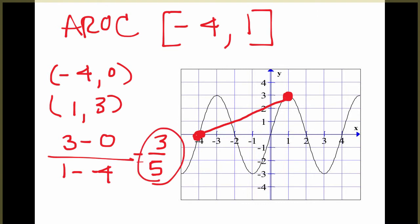So what that means is, on average, when our x's go from negative 4 to 1, the y's are changing, on average, 3 fifths for every unit we go to the right. And you can see that that works because here we go up 3 and over 5, giving us an average rate of change of 3 fifths.